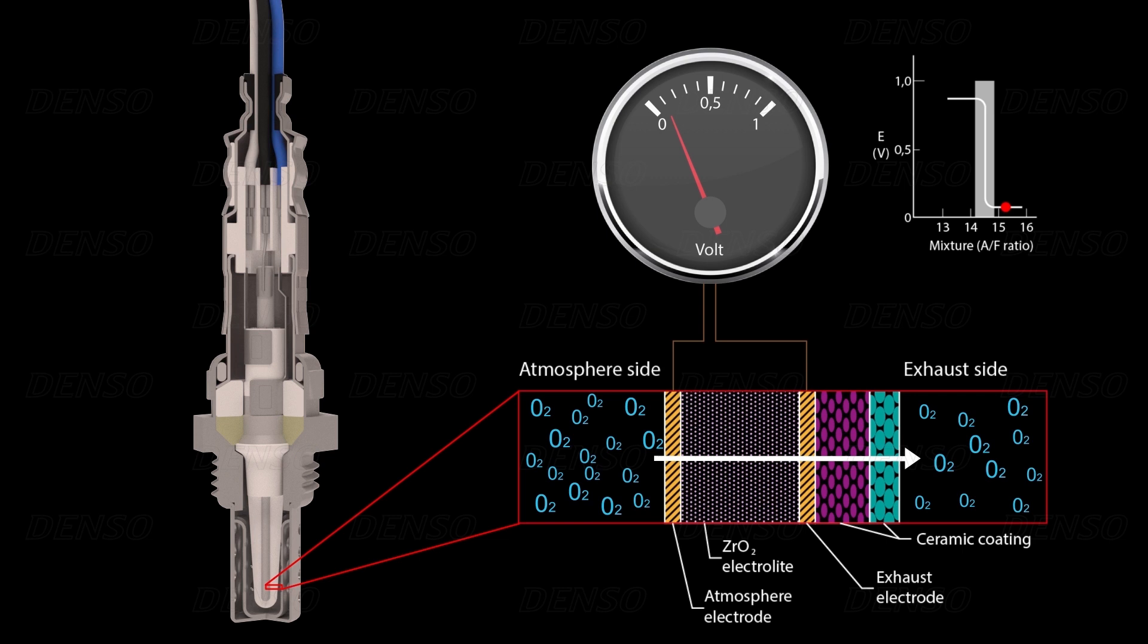When a rich mixture exists, the oxygen content in the exhaust gas is low, so there is a large difference in the oxygen content across the element. This produces a higher flow of oxygen ions, resulting in a high voltage signal of around 0.9 volts. But when a lean mixture exists, the exhaust gas contains more oxygen content, so there is less difference in the oxygen content across the element. The flow of oxygen ions is therefore reduced, resulting in a low measurement signal of around 0.1 volts.